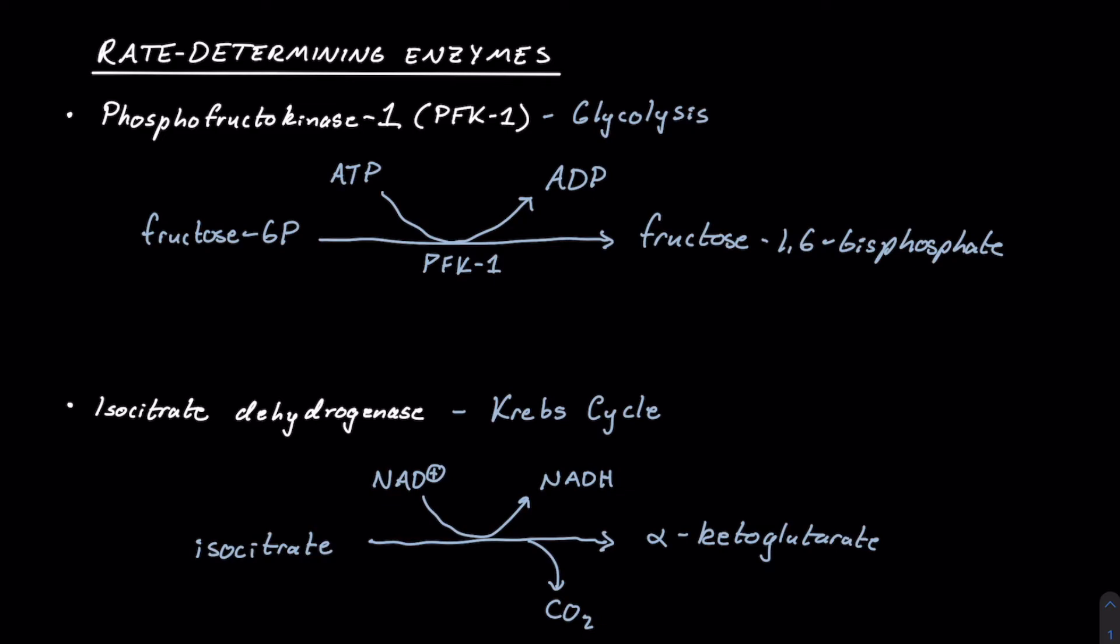Another thing I want to mention is what actually regulates these rate-determining enzymes. Phosphofructokinase will be upregulated by the presence of AMP, which is adenosine monophosphate, and it will be downregulated by ATP and citrate, an intermediate in the Krebs cycle. This should make some logical sense because we want to upregulate the activity of glycolysis, which will help us produce more ATP. If we are energy deficient, high concentrations of AMP would be indicative of that because it's not in its high-energy ATP form. Whereas if we have high ATP or high citrate, then we know perhaps we have sufficient glycolysis going on.